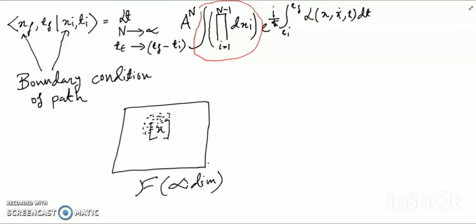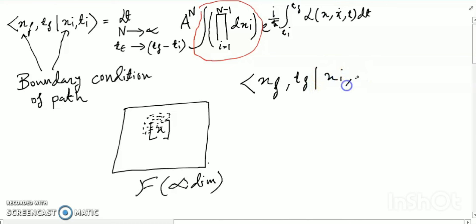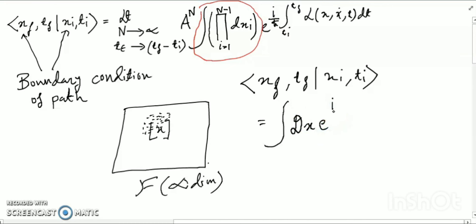We write it as the curly D of x times e to the power i over h-bar times the action S sub x. This is the Feynman path integral.